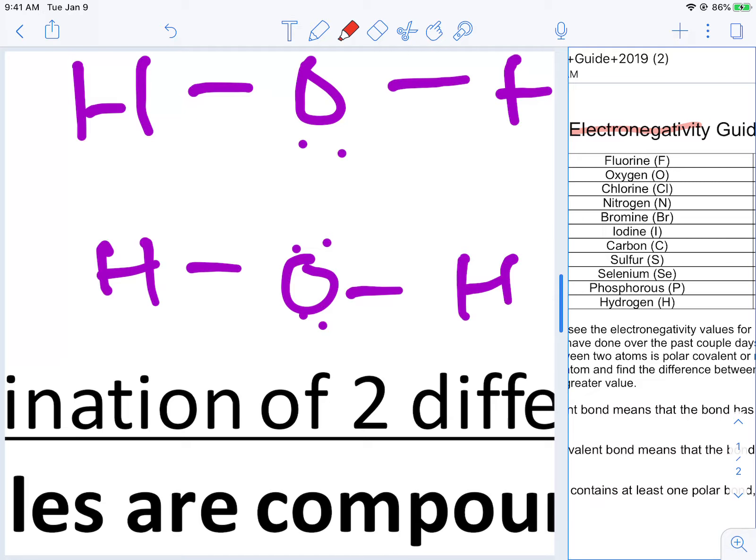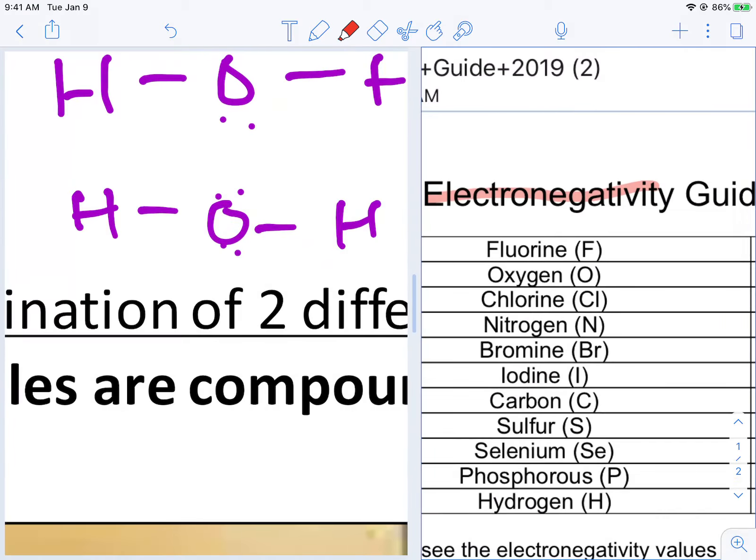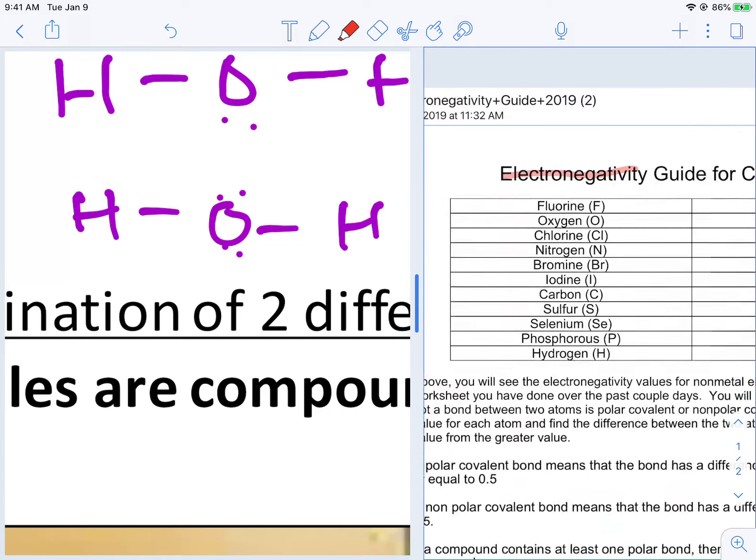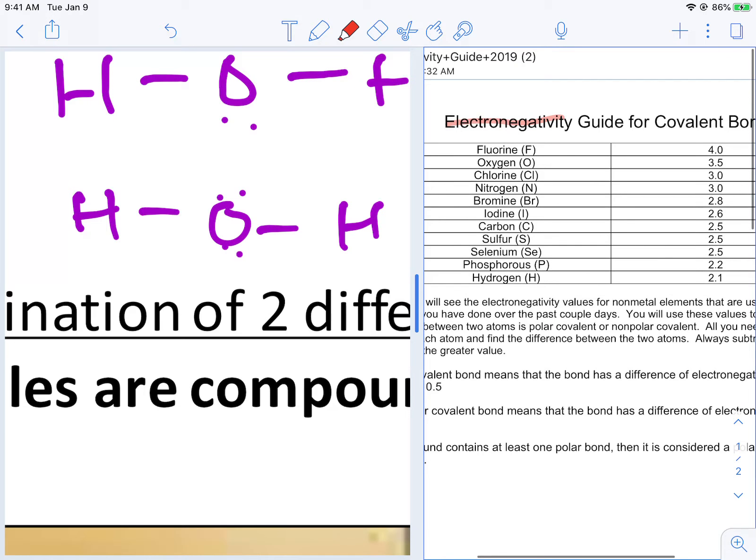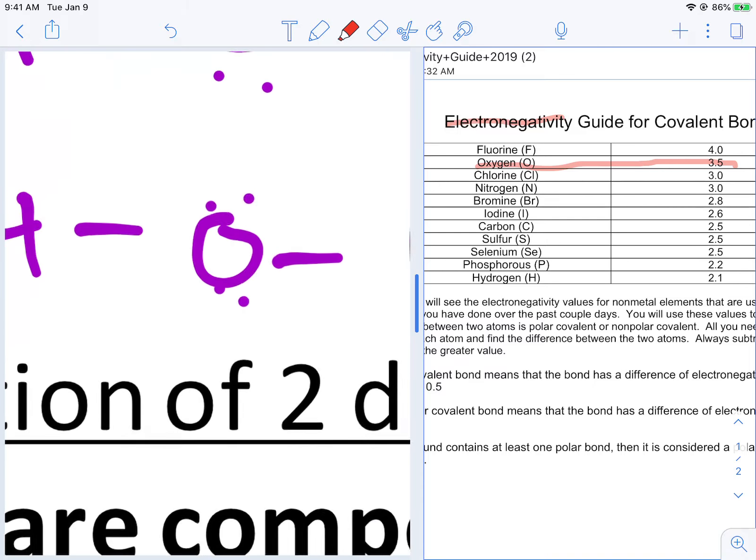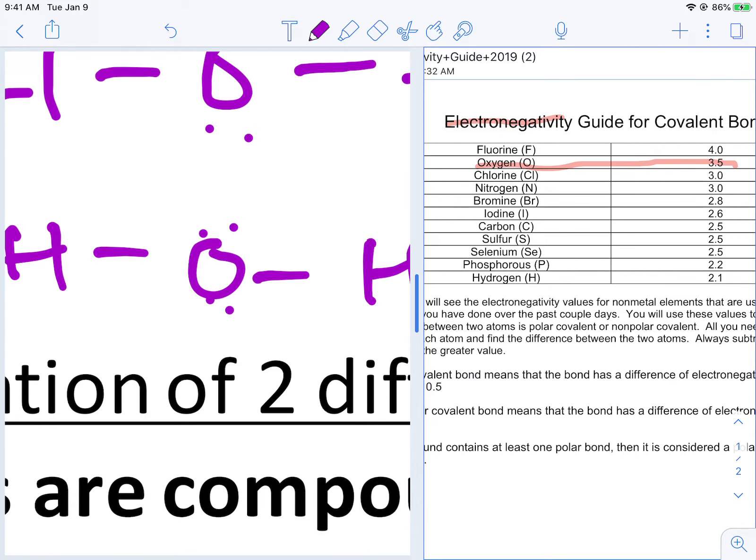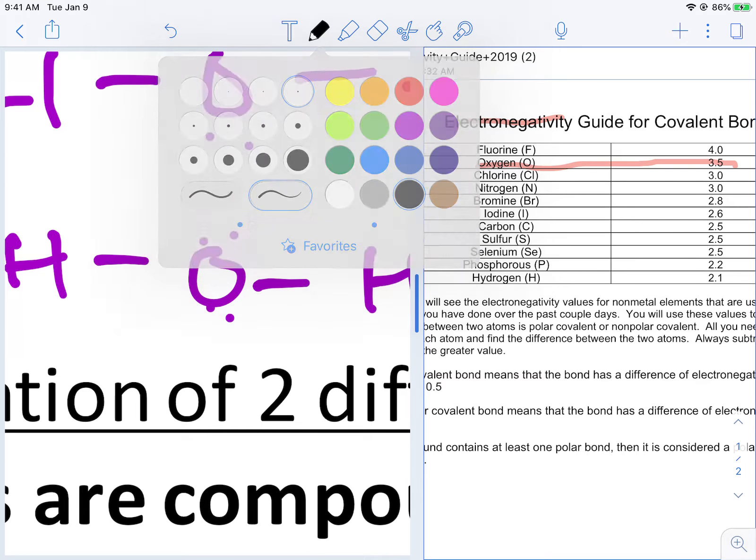So let's do water as a practice. I have here a guide of our most common elements of electronegativity. And so what we're going to do is refer to this table and see what we've got. Oxygen, the guy in the middle, has a net electronegativity of 3.5.